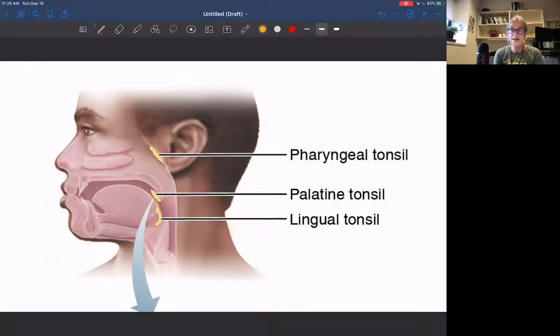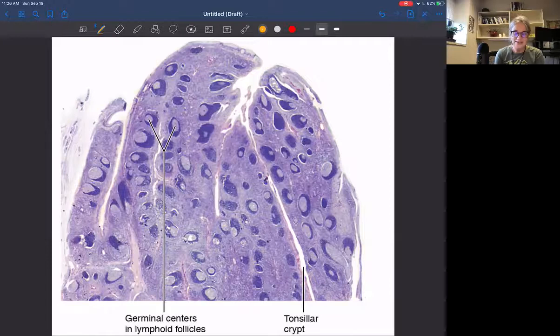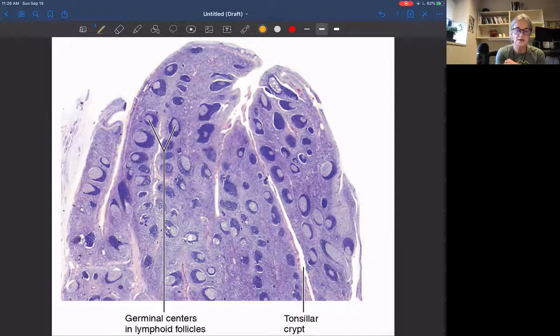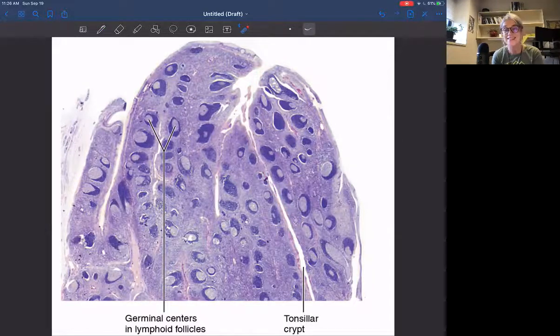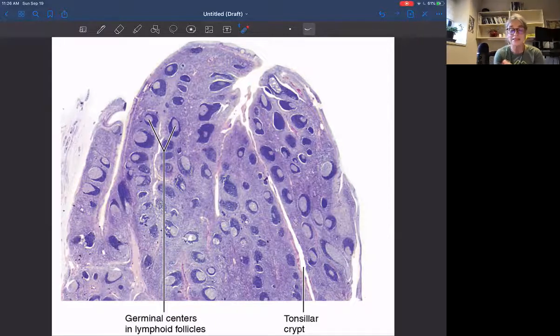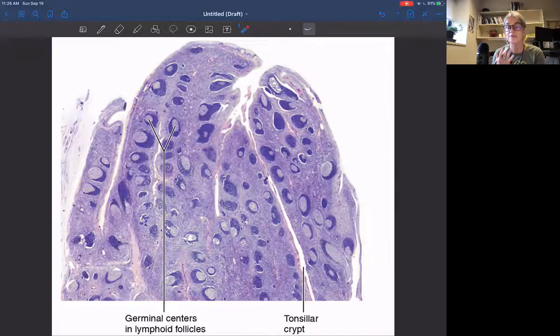When we look at the tonsils, they are super interesting in their structure because they have these crypts. So this is like an open. And boy, that looks like microbes could enter there, and that might look like a bad thing. But these tonsillar crypts actually help to take in microorganisms so that they can be analyzed. And so we have these germinal centers, which have white blood cells that help in breaking down the microbes and then analyzing them. And then maybe even initiating an adaptive immune response, which is a learned immune response.